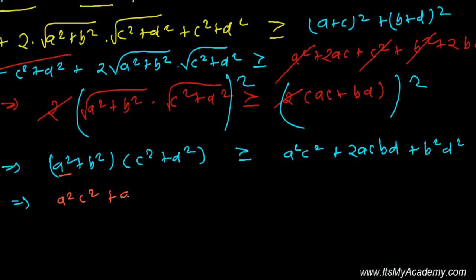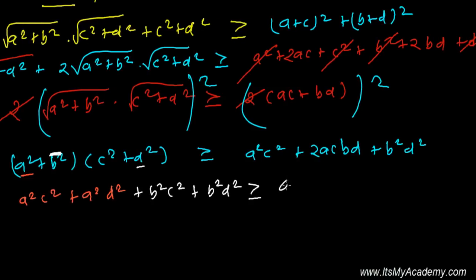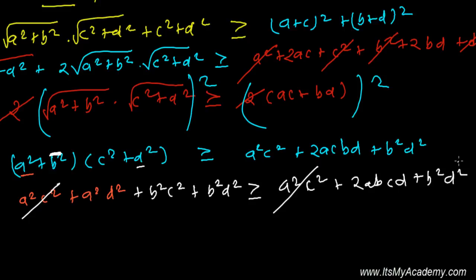Expanding the left side: a²c² + a²d² + b²c² + b²d². This must be greater than or equal to a²c² + 2abcd + b²d². Now a²c² and b²d² cancel from both sides.